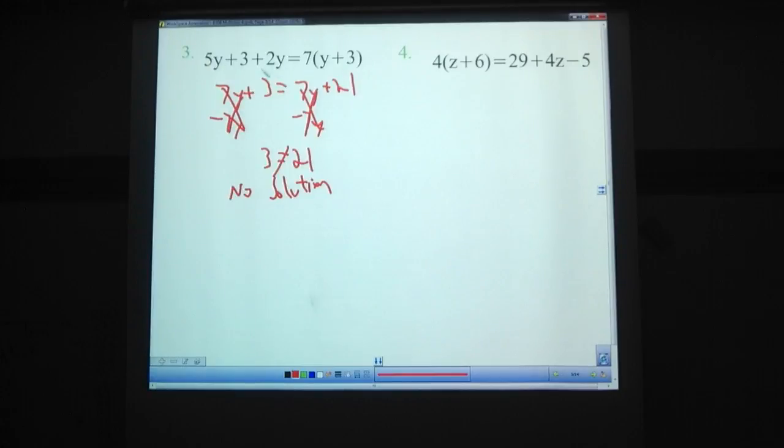We can try out some numbers for this to check that. So we put in, let's say, 2. 5 times 2 plus 3 plus 2 times 2 equals 7 times 2 plus 3. So 5 times 2, that's 10. 10 plus 3 plus 4. Here, 2 plus 3, that's 5. 7 times 5. So that's 17 equals 35. Those are not equal. And they're 18 apart to their bills worth, so that confirms no solution.